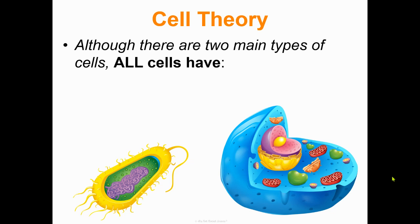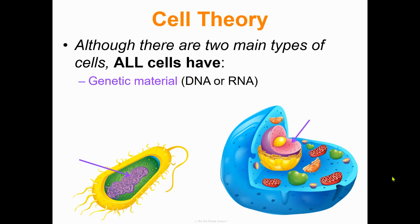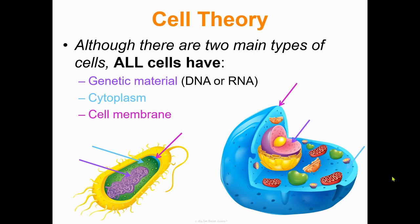Although there are two main types of cells, prokaryotic and eukaryotic, all cells have these four components: one, genetic material, either DNA or RNA; two, cytoplasm, which is what the parts inside the cell are floating in; three, a cell membrane around the outside of the cell; and four, ribosomes, which are super important organelles for making proteins.